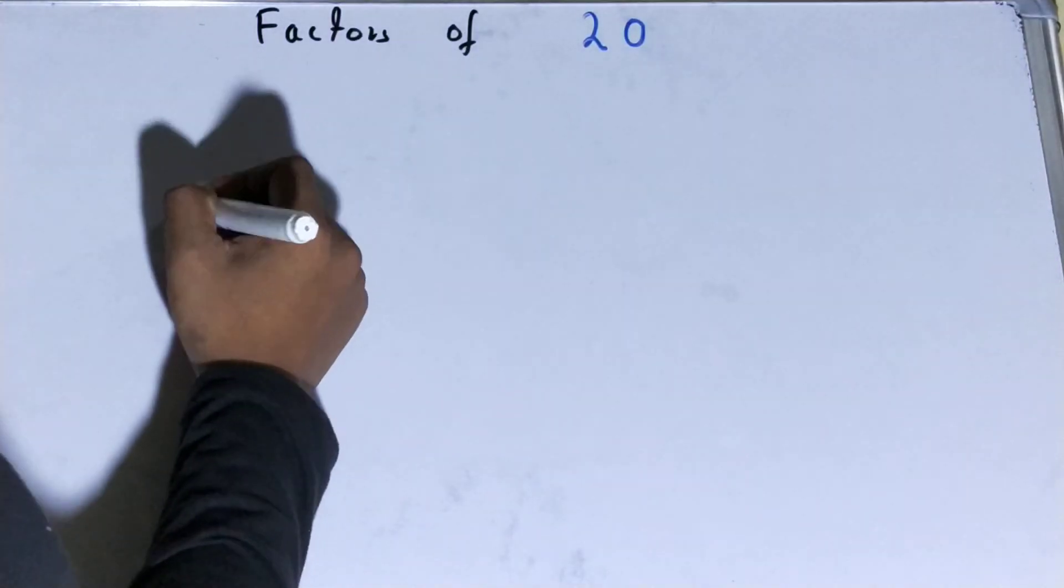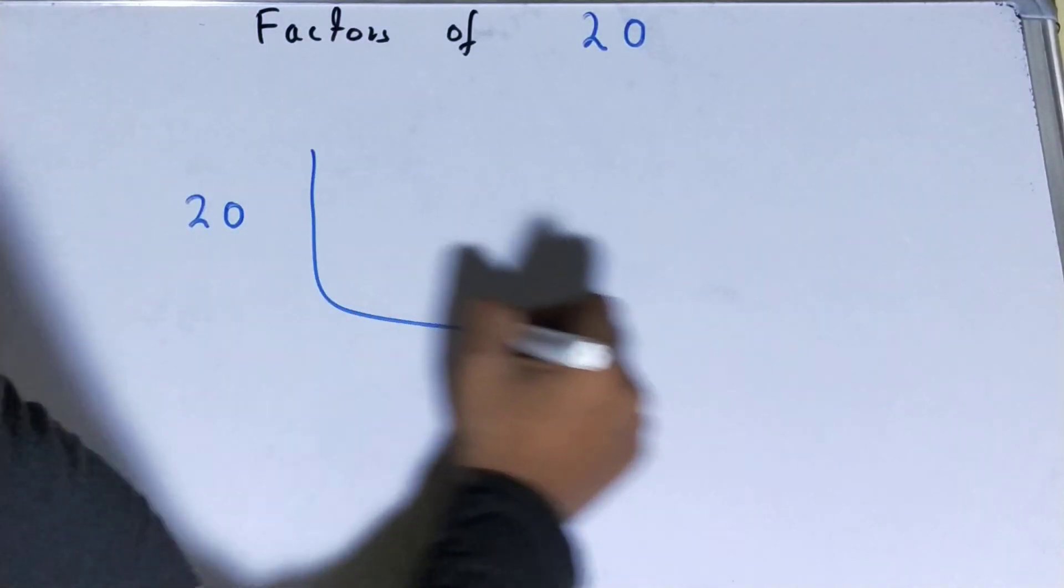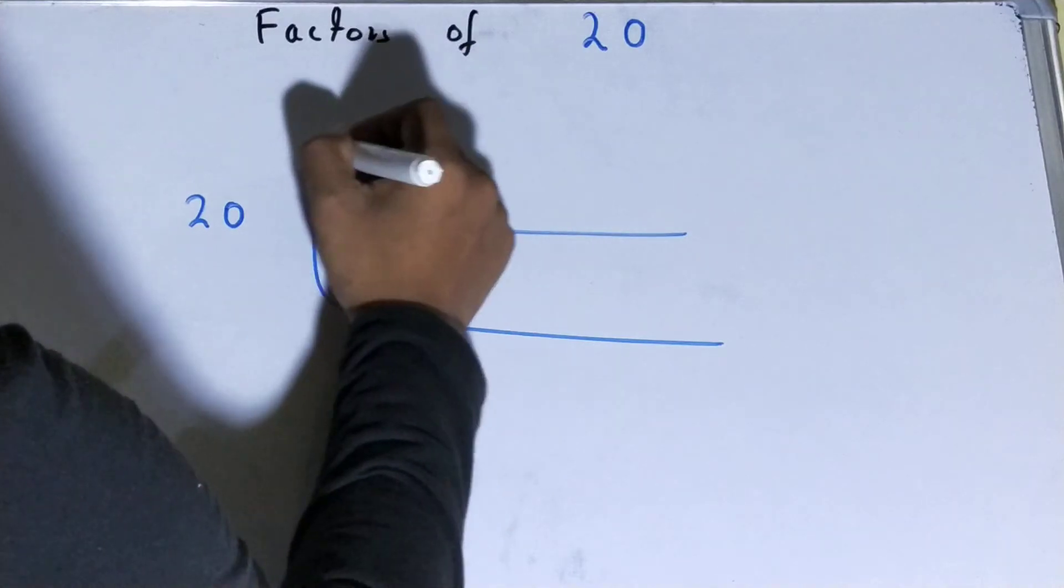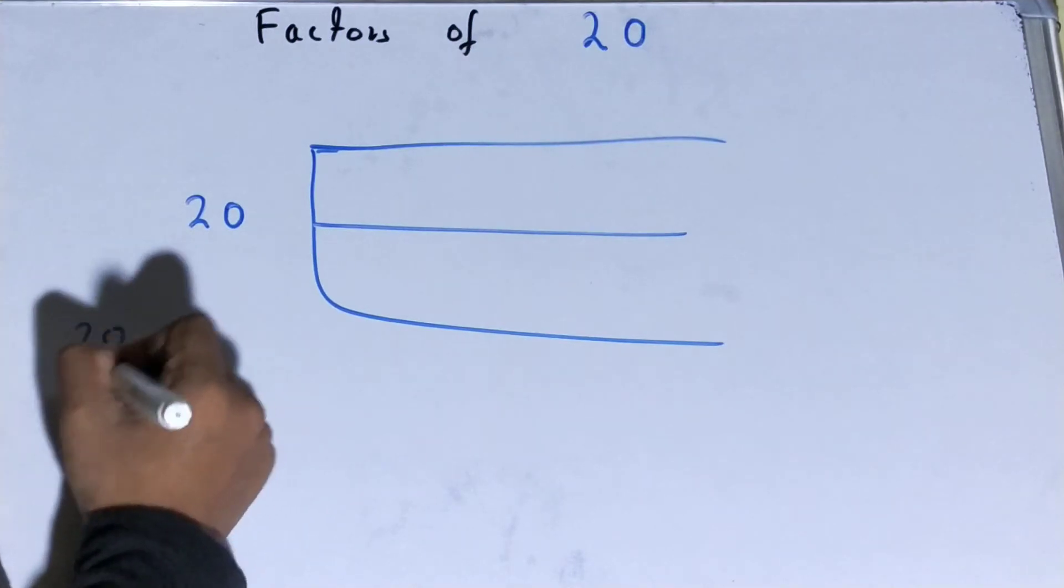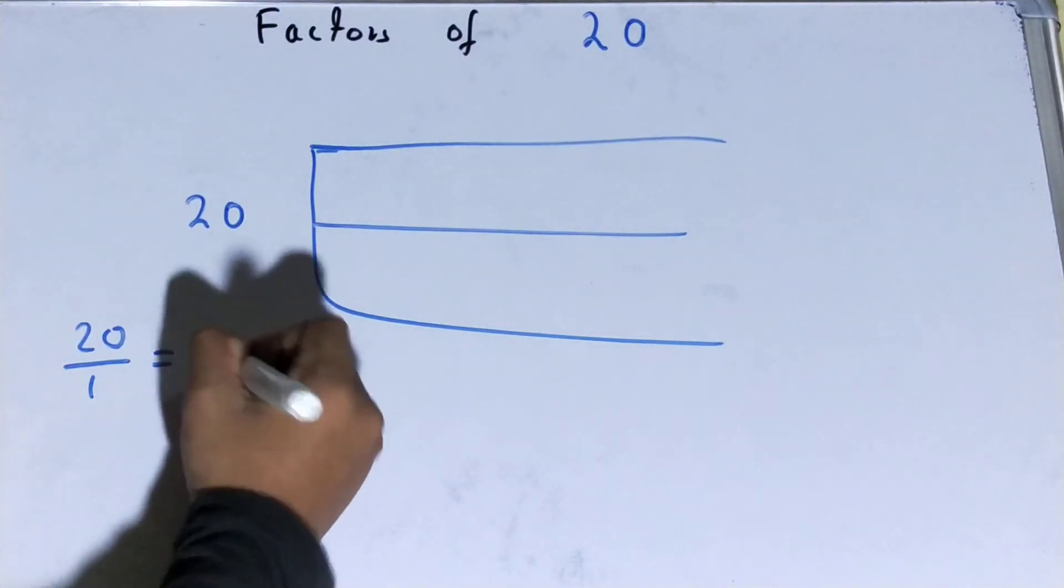Now let's quickly find out all the factors of the number 20. I'm using one of the easiest methods for that, and we will start with the lowest natural number, that is 1.